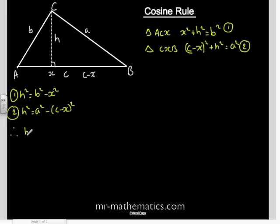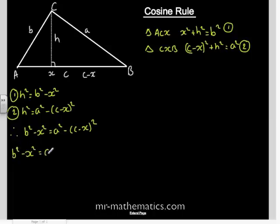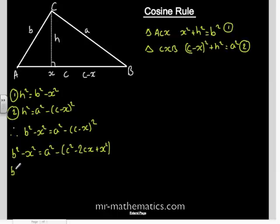The height is the same in both triangles, so the equations must be equal: B squared minus X squared equals A squared minus C minus X, all squared. We multiply out C minus X squared to get C squared minus 2CX plus X squared, then multiply out the negative, giving B squared minus X squared equals A squared minus C squared plus 2CX minus X squared.